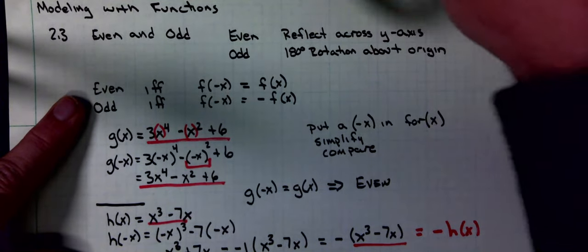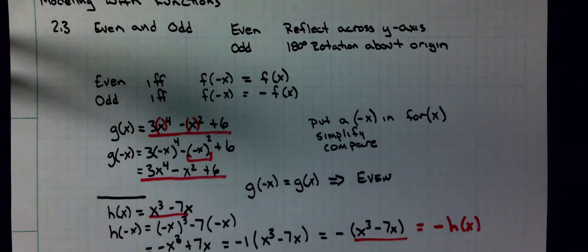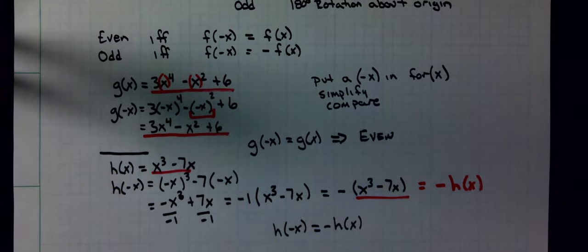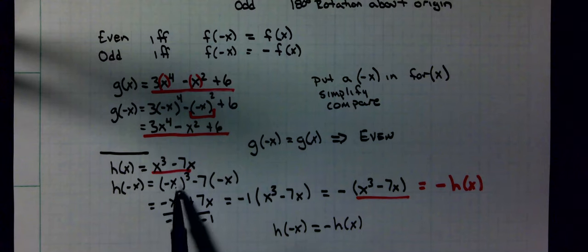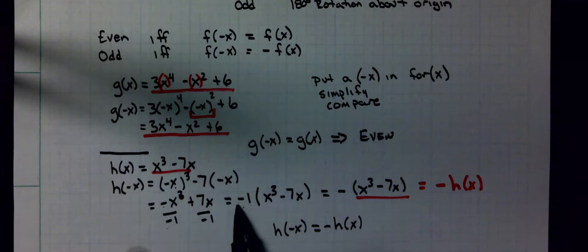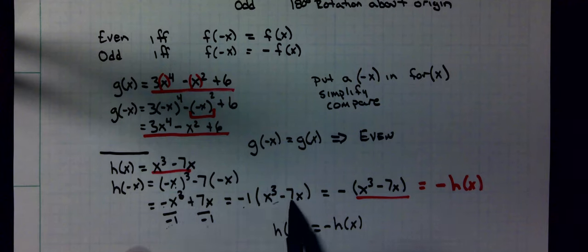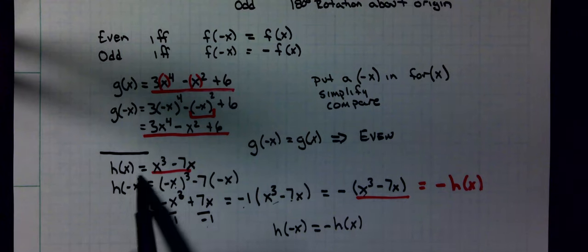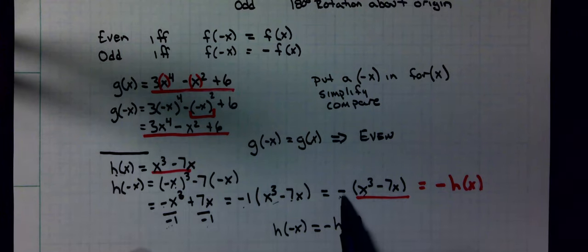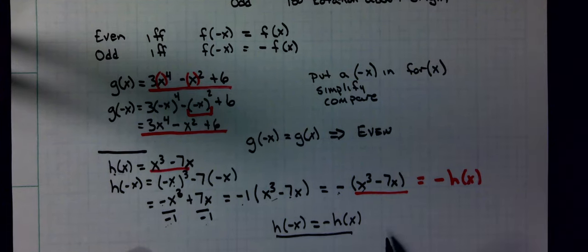I didn't realize that I did not have that on this board. I'm going to talk through that second part again. I take that original function, where there's an x I put parentheses and inside the parentheses I put the negative. That negative x times negative x times negative x is -x^3. -7 times -x is positive 7x. I factored a -1 out of both terms, gave me -1 times (x^3 - 7x). I then looked back and saw that x^3 - 7x is h(x), so this turns into -h(x).